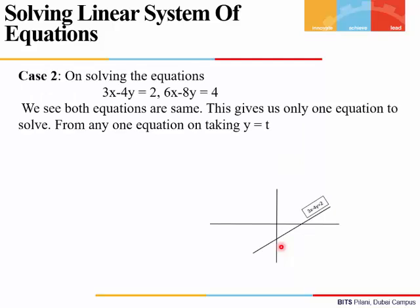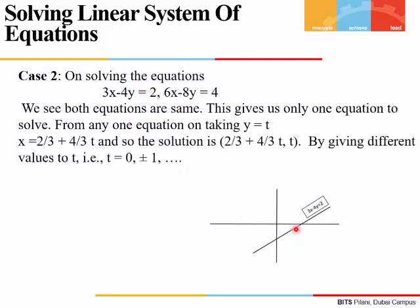In another example, the second equation is the same as the first because dividing by 2 gives us the first equation. If we plot the lines, one line will lie over the other — they overlap. Since we effectively have just one equation, we assume a value for one variable: let y equal a parameter T. Substituting y equals T gives x equals 2/3 plus (4/3)T. So the solution becomes (2/3 + (4/3)T, T). For different values of T we get different values of x and y, meaning there are infinite solutions because all points on the line satisfy the equation.